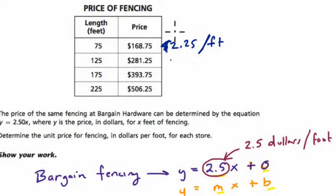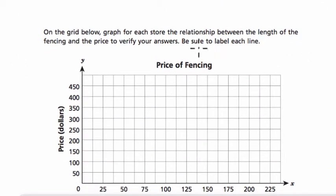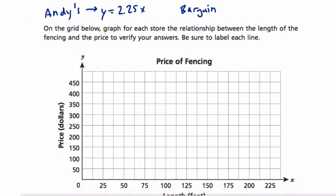So this means that the unit rate at Andy's hardware store is $2.25 per foot. And you can write the equation y equals 2.25x. It's going to be helpful to us. Now let's go into part two, where we graph. And before we go any further, I'm just going to rewrite these things before I forget them. At Andy's, the equation was y equals 2.25x. And at bargain, bargain fencing, it's y equals 2.5x.